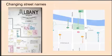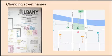The names of streets also changed over time. The 1884–1885 Sanborn Fire Insurance map of Albany shown on the left of the slide shows Commerce Street. The current Google map on the right side of the slide shows that there is no Commerce Street, because Commerce Street is now called Oglethorpe Boulevard.